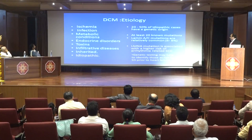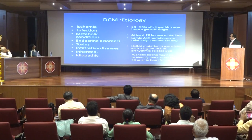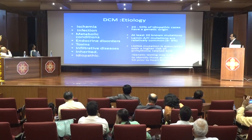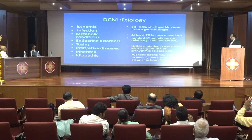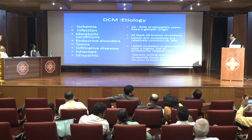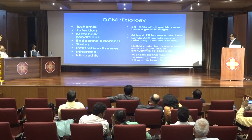There is a wide range of causes and etiologies for dilated cardiomyopathy, starting from ischemia, infection, inherited causes, and endocrine disorders. The most important are the idiopathic causes — 20 to 50% of DCM are idiopathic.